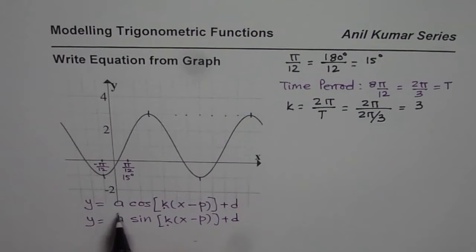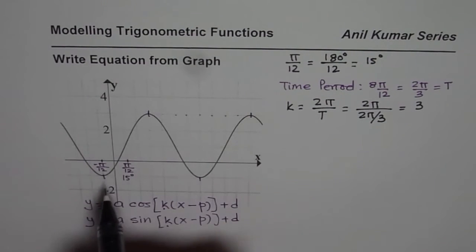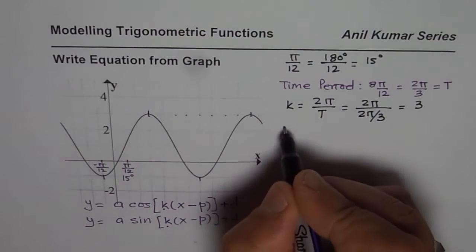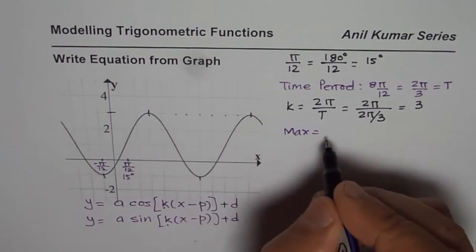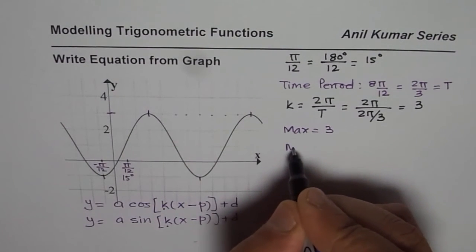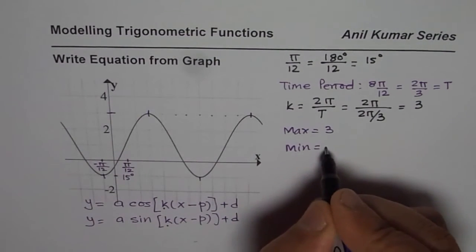Let us now find what is a, the amplitude, and d, the axis. To find amplitude and axis we need to look into maximum and minimum from the graph. We can read these values. Maximum is 3, minimum value is -1.